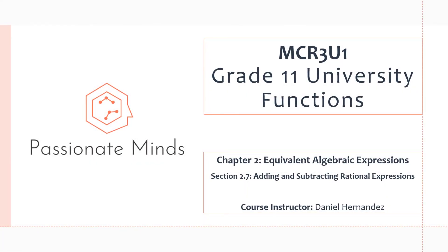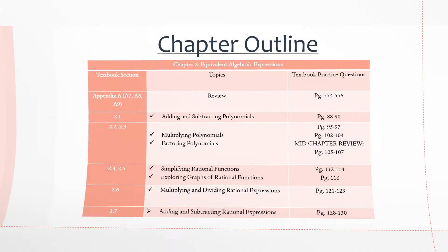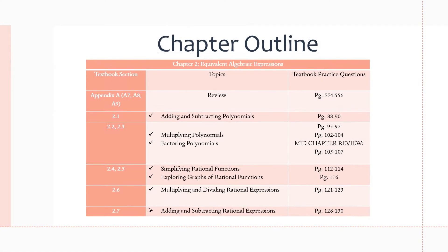Hello everyone, welcome to the next and final chapter 2 video. Today we will be covering the last topic of this chapter, which is section 2.7 in the textbook regarding adding and subtracting rational expressions. Here is the chapter outline one more time, and I recommend you do the practice questions for this section, which can be found on pages 128 to 130. So let's get started.